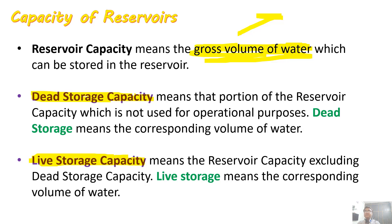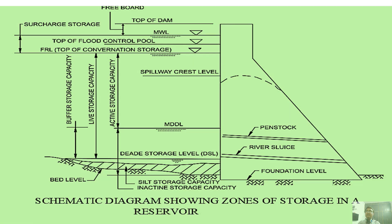Dead storage capacity is that portion of the reservoir capacity which is not used for operational purposes. Dead storage is the volume of water corresponding to the dead storage level. Out of the total gross volume, if we subtract the dead storage capacity, we are left with the live storage capacity. Live storage capacity is the reservoir capacity excluding dead storage — it represents the volume of water that is actively usable.